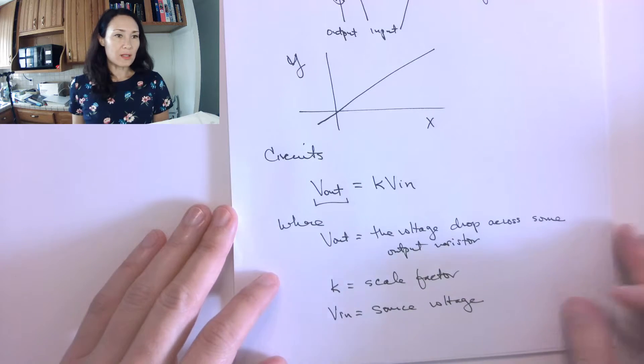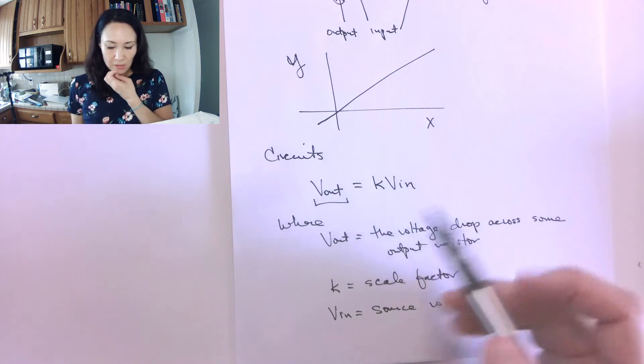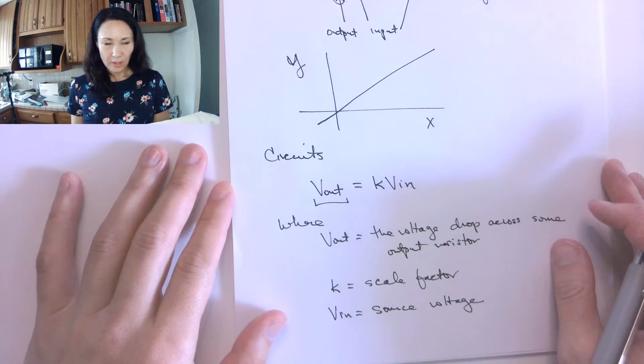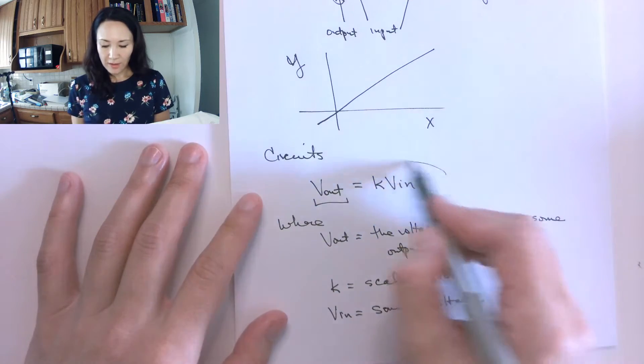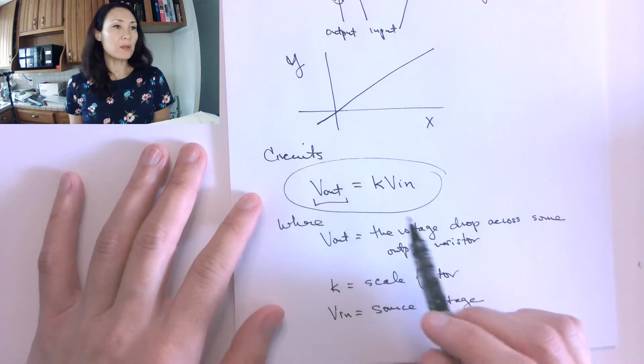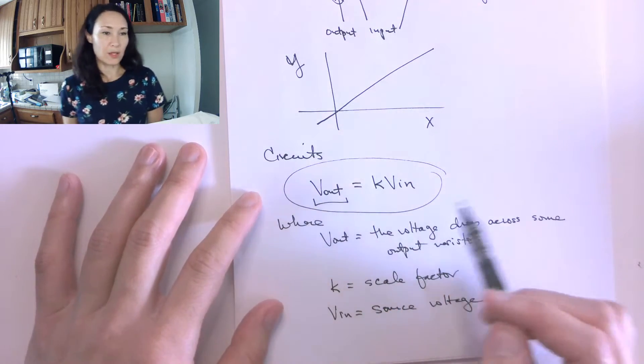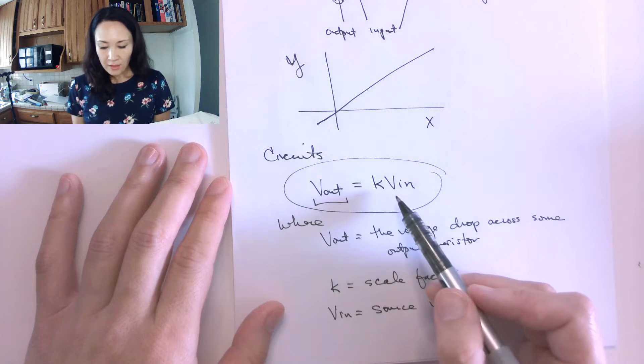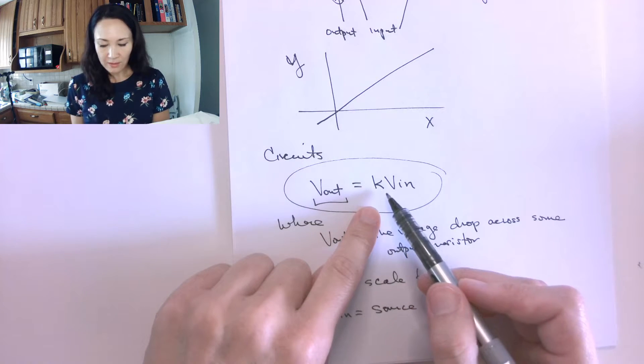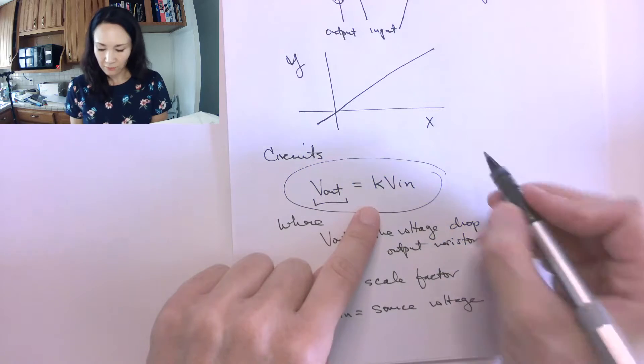So now that we've kind of defined all the pieces, the goal here is for a given circuit, we want to be able to develop this equation. We want to be able to express v out as a function of v in. And then whatever's being multiplied by the v in is going to be our scale factor.